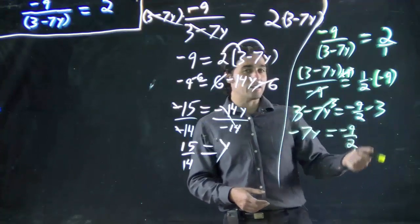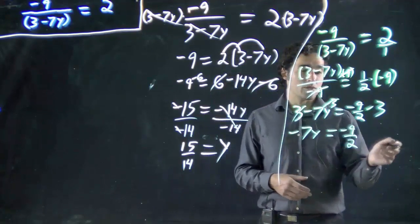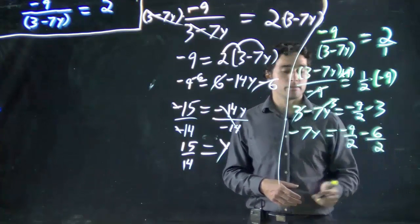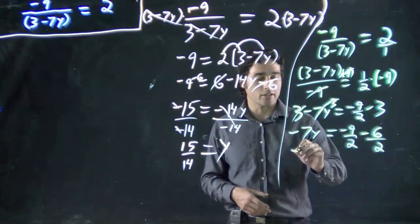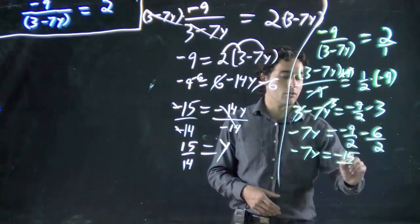And remember, I need to have these both to the same denominator or the same number on the bottom for them to be combined. So that's the same as saying minus 6 over 2. Great. I combine those together. I've got minus 7y equals minus 15 over 2.